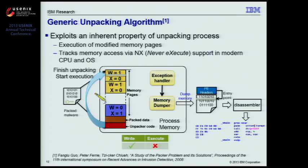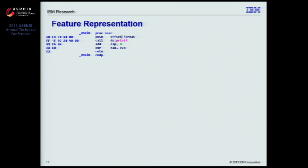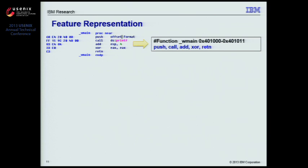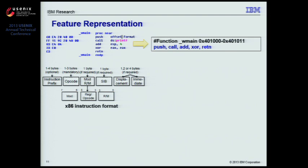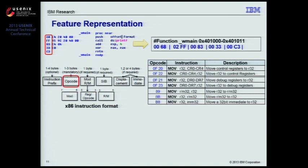Given this disassembled sequence of instructions, the next challenge is how to convert it into a format suitable for similarity comparison between malware variants. Previous work has used mnemonic sequences like move, push, pop to represent each instruction. In MaltonX, we take a different approach — we explore the x86 instruction format and use the opcode as a more accurate representation for the semantics of each instruction, because we found that mnemonics are sometimes overly generalized in terms of the underlying CPU operation.